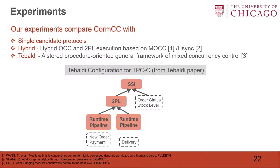In that configuration, stored procedures new-order and payment are grouped together and managed by a runtime pipeline, which is an optimized two-phase locking. Delivery is in a single group, and order-status and stock-level are managed by snapshot isolation.